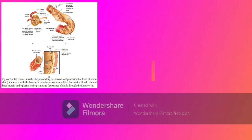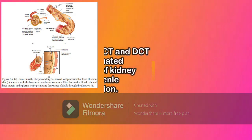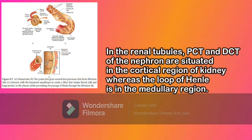In the renal tubules, the PCT and DCT of the nephron are situated in the cortical region of the kidney, whereas the loop of Henle is in the medullary region. In a majority of nephrons, the loop of Henle is too short and extends only very little into the medulla; these are called cortical nephrons. Some nephrons have a very long loop of Henle that runs deep into the medulla and are called juxtamedullary nephrons, or JMN.